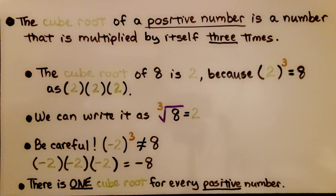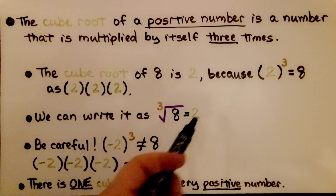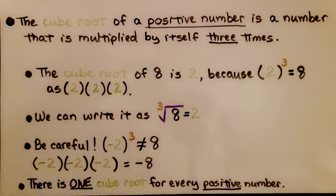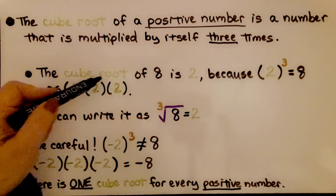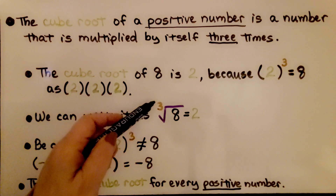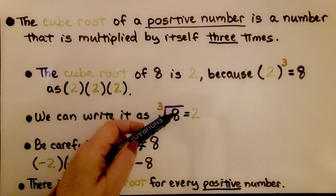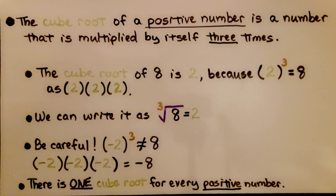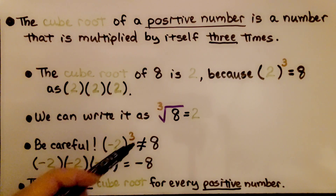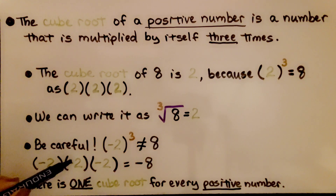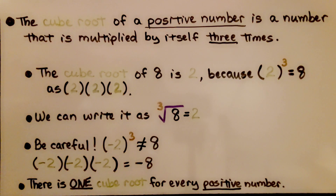The cube root of a positive number is a number that is multiplied by itself 3 times. The cube root of 8 is 2, because 2 to the third power — 2 cubed — is equal to 8. It's multiplied by itself 3 times: 2 times 2 times 2. 2 times 2 is 4, times 2 is 8. We write it with a little 3 index and a radical sign with 8 underneath, equal to 2. Be careful: negative 2 cubed is not equal to 8. Negative 2 times negative 2 is positive 4, and positive 4 times negative 2 is negative 8. There is only one cube root for every positive number.